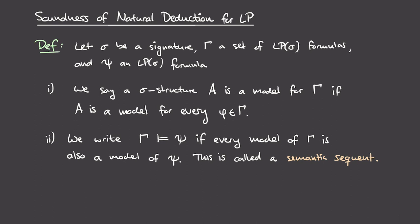The next part of the definition introduces the idea of a semantic sequent. We write that gamma models psi if every model of the set gamma is also a model for the formula psi. Unpacking this: for any sigma structure A that makes all of the formulas in gamma true, such a model will also make the formula psi true. This is precisely what we need to express that whenever a sigma structure makes all hypotheses true and we can prove some formula psi from those hypotheses using natural deduction, then that sigma structure also makes psi true.